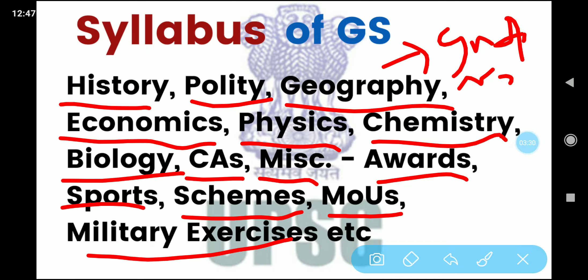As you can see, History consists of Ancient, Medieval, and Modern history, which I think is the vastest topic among all the topics. Polity is also vast, but you have to prepare for Indian government, Indian policy, and the Indian Constitution. For Geography, as mentioned, you need to cover Indian geography and World geography. For Economics, you need to study market systems and many more things such as GDP.